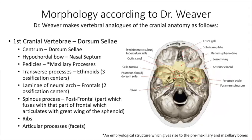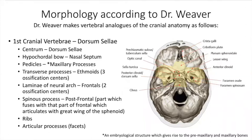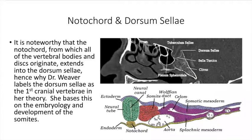The first cranial vertebra, in her view, is the dorsum sellae. The dorsum sellae she would consider to be the centrum, the hypochordial bow, or the anterior part of that vertebra. She's looking at the nasal septum and starting to incorporate other facial bones — maxillary processes, ethmoid bones, frontals, and so forth — incorporating aspects actually outside of the dorsum sellae. It is noteworthy that the notochord, which is where all vertebral bodies and discs originate, extends into the dorsum sellae. This is why Dr. Weaver labeled the dorsum sellae as the first cranial vertebra. Going inferior, you look at the sphenoid as the second and the occiput as the third cranial vertebra. She bases this on the embryology and development of the somites.